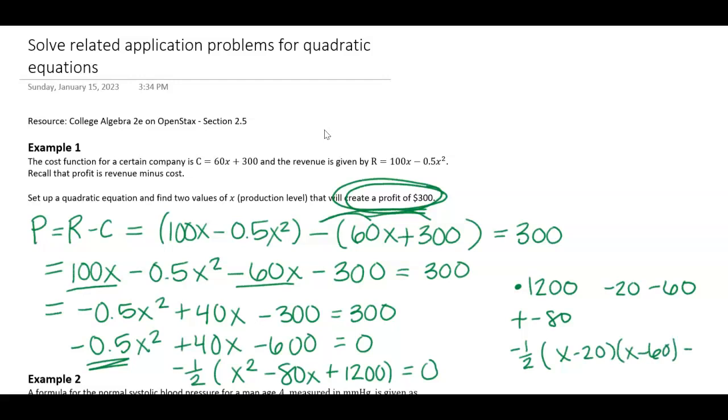So this quadratic equals 0 at 20 and 60. Or to put this back in context, it's going to be equal to 300 for a profit overall at these two production levels.